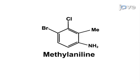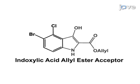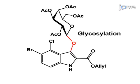This is accomplished by first synthesizing an indoxylic acid allyl ester acceptor starting from methyl aniline. The second step involves glycosylating this acceptor with an acetylated glycosyl halide donor.